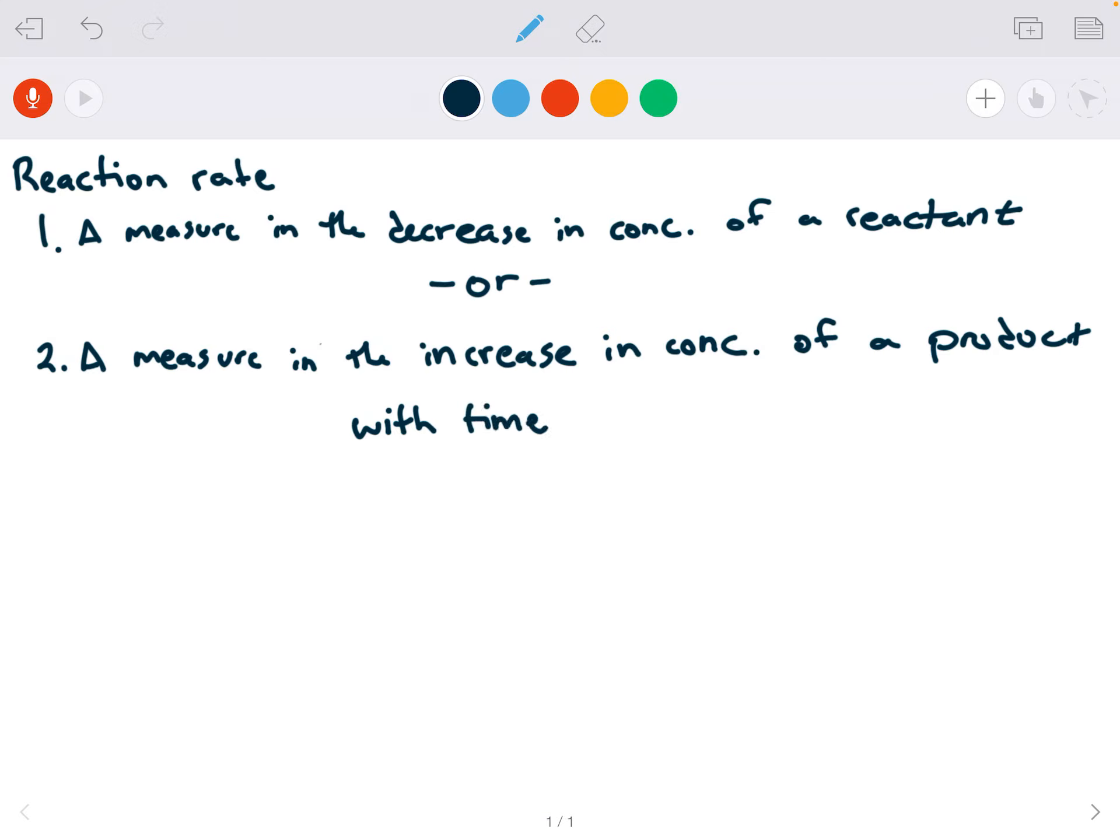When a reaction takes place, you lose reactant as you gain product. So that's why you can measure reaction rate with either of the two.